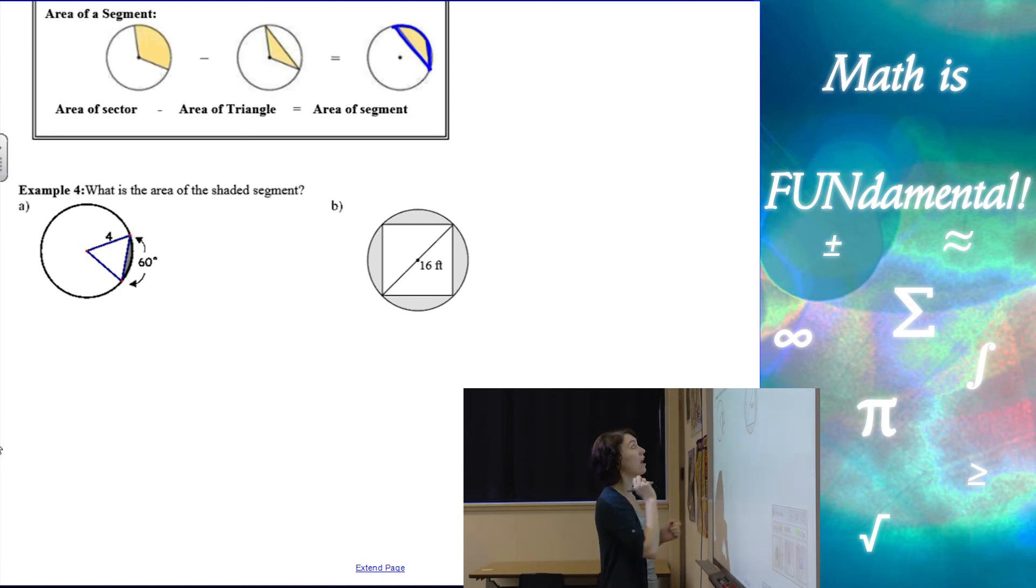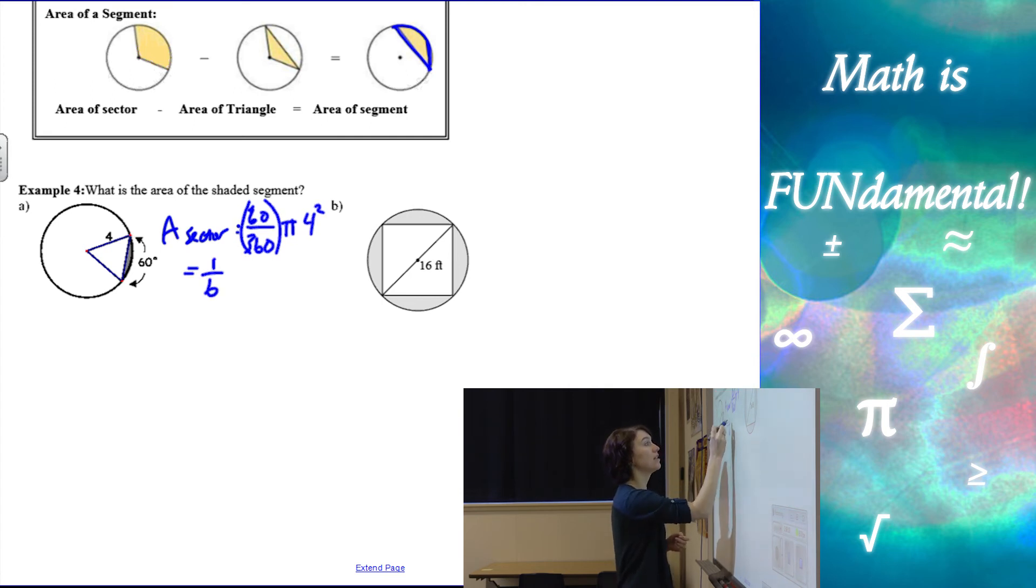I want to find the area of the sector and the area of the triangle and then subtract them. So let's talk about area of the sector first, we just practiced that. That's going to be 60 out of 360, so there's the fraction of my circle, and then times pi r squared, so that's going to be 1 sixth times 16 times pi, which can reduce to 8 pi over 3. And again, we don't have any units, so I'm just going to put un for units squared.